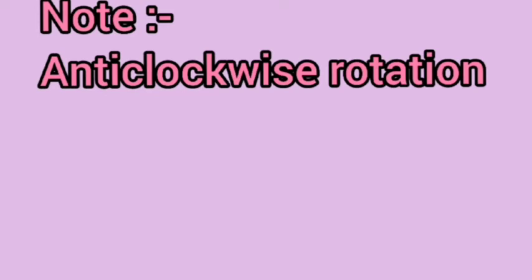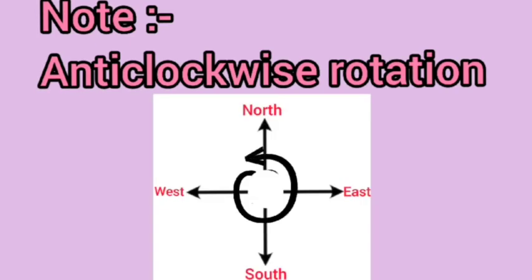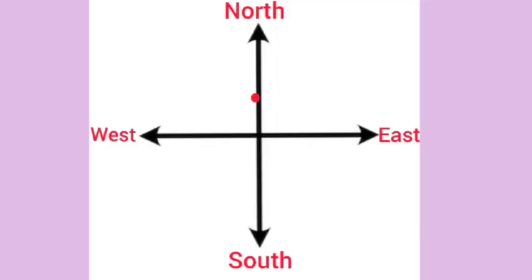Note, similarly, we take for anticlockwise. Anticlockwise, we have to move in opposite direction. So, here, if we move from north to west in anticlockwise, one-fourth of a rotation is completed, means 90 degree.